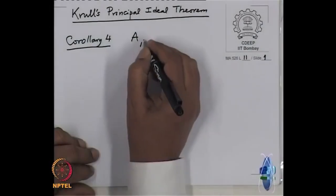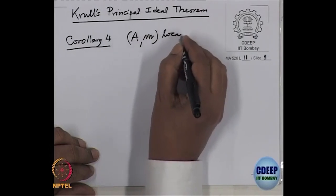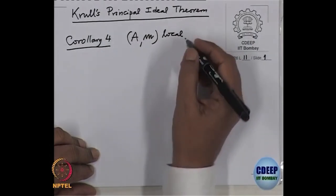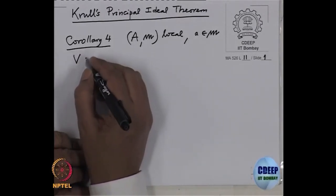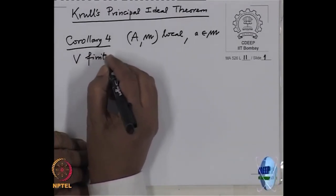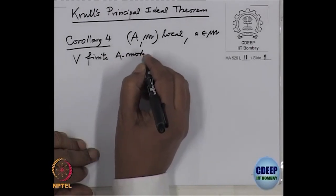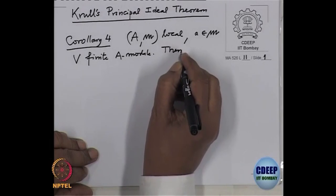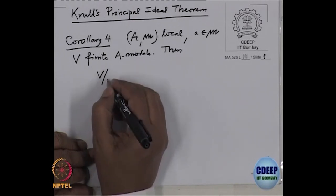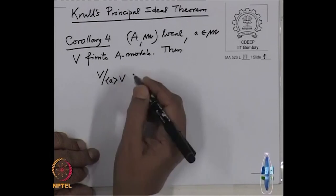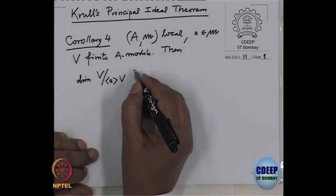This corollary is slightly different in flavor from corollary 3. As usual, our notation: A, M is a local ring — local always includes Noetherian — and A is an element in the maximal ideal M, and V is a finitely generated finite A-module. We have seen that if I mod out by this element A, that is if I consider the module V/AV, the dimension of this module can drop by at most one.